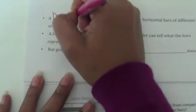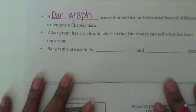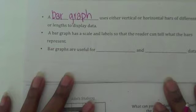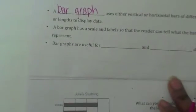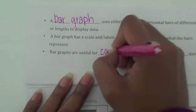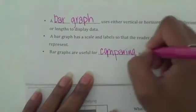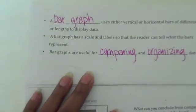A bar graph uses either vertical or horizontal bars of different heights or lengths to display data. A bar graph has a scale and label so that the reader can tell what the bars represent. If you look at the graph here, you've got labels and a scale so you can tell what this graph represents. Bar graphs are useful for comparing and organizing data.